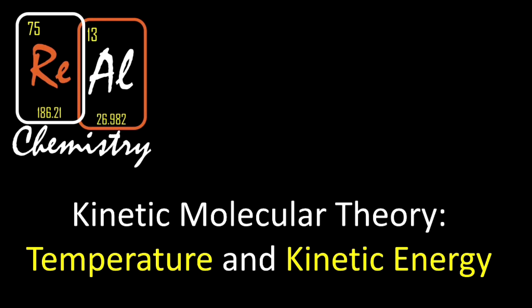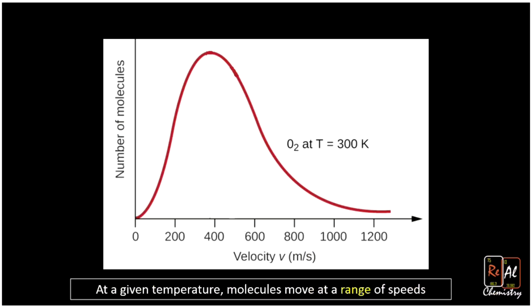First, let's just get a feel for what gas molecules are doing at a given temperature. Here we have a graph which tells us on the y-axis we have number of molecules. The higher that peak is, the more molecules there are at a given velocity, which is our x-axis. This whole curve is for oxygen at 300 Kelvin, about room temperature. The important thing I want you to get from this is that at a specific temperature, 300 Kelvin in this case, molecules move at a range of speeds.